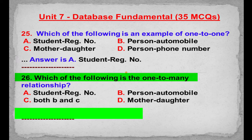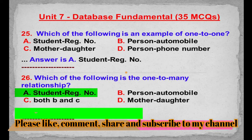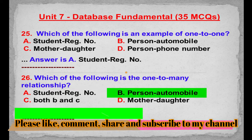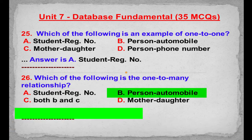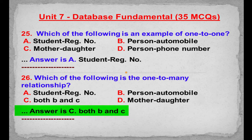MCQ number 26: Which of the following is the one-to-many relationship? Option A: Student registration number. Option B: Person automobile. Option C: Both B and C. Option D: Mother daughter. Correct answer is Option C: Both B and C.